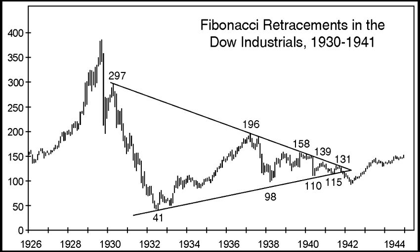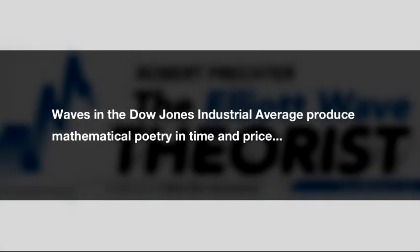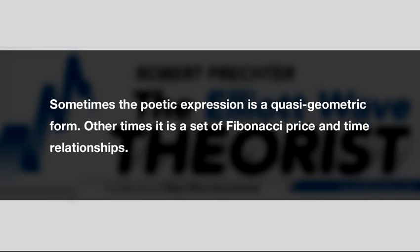What does a discussion of Fibonacci have to do with today's stock market? The just published double issue of the Elliott Wave Theorist says: waves in the Dow Jones Industrial Average produce mathematical poetry in time and price. Sometimes the poetic expression is a quasi-geometric form. Other times it is a set of Fibonacci price and time relationships. When both occur, it rhymes.